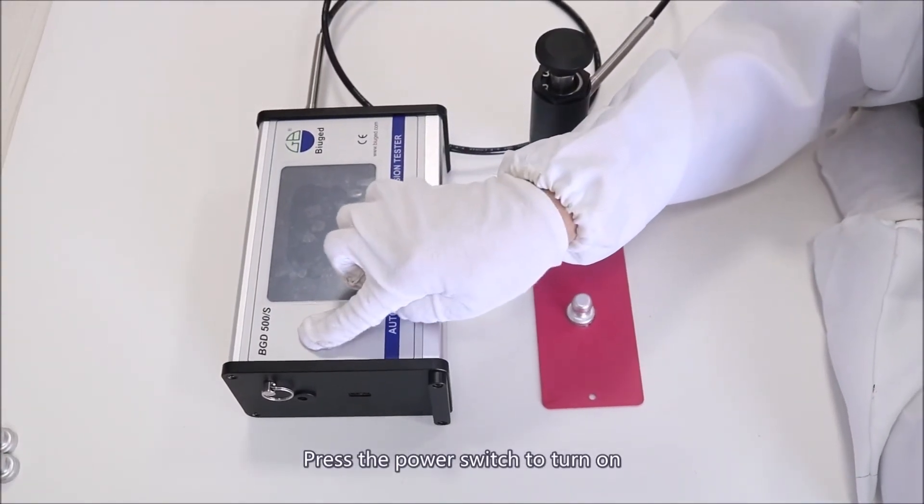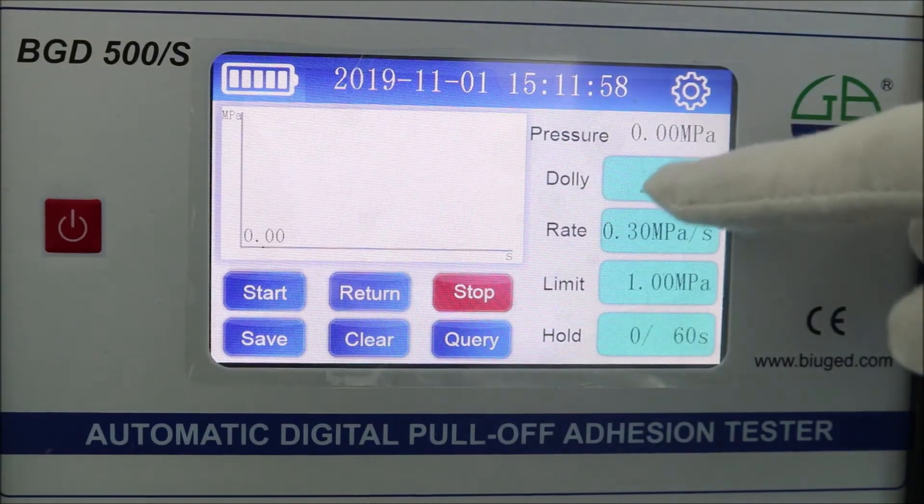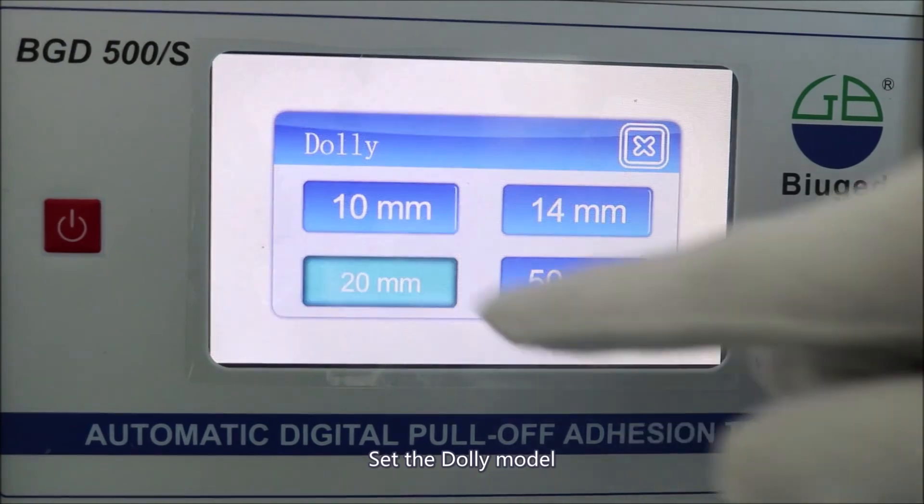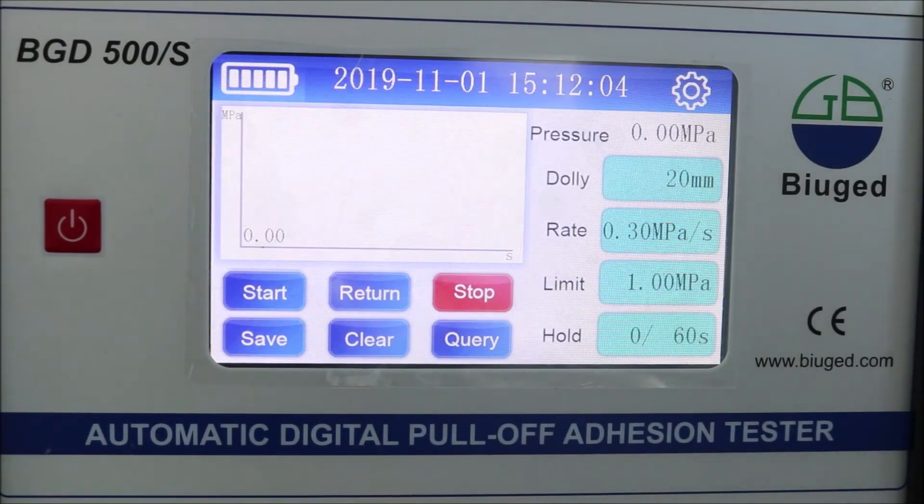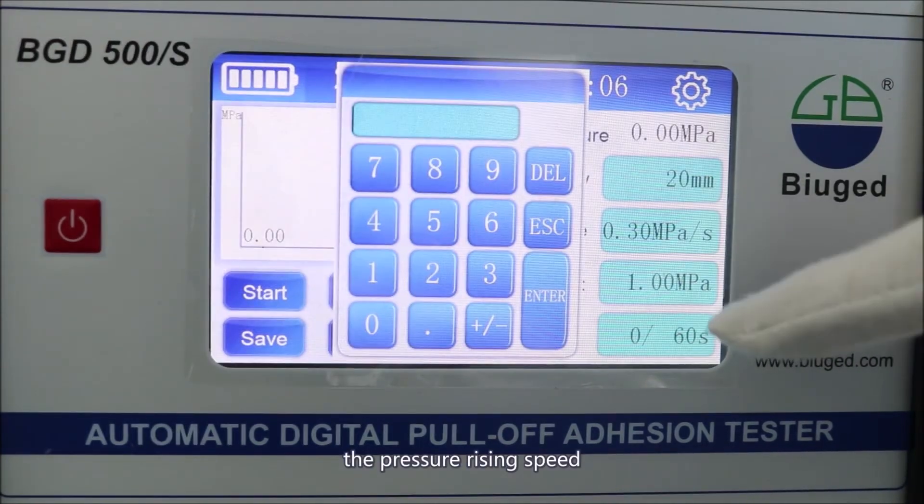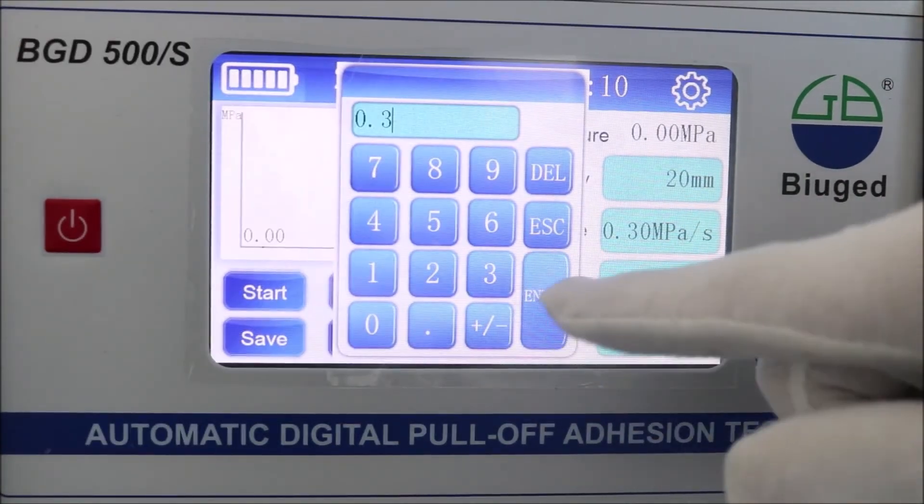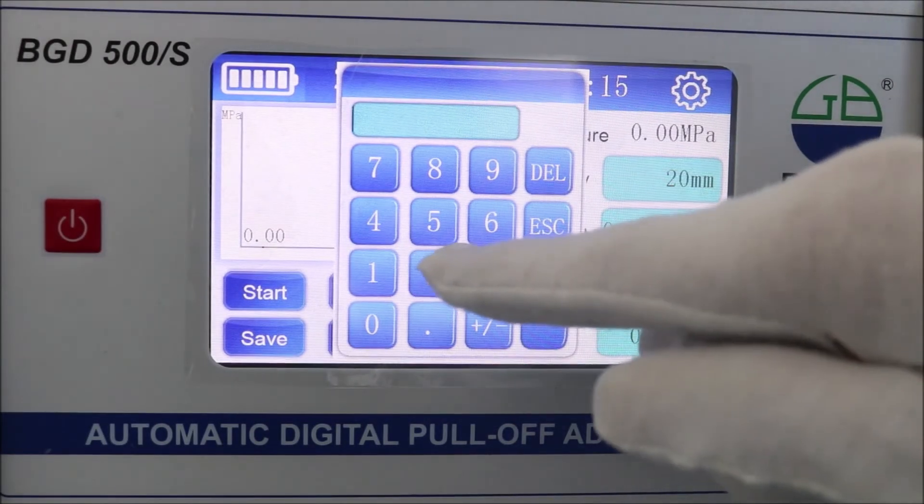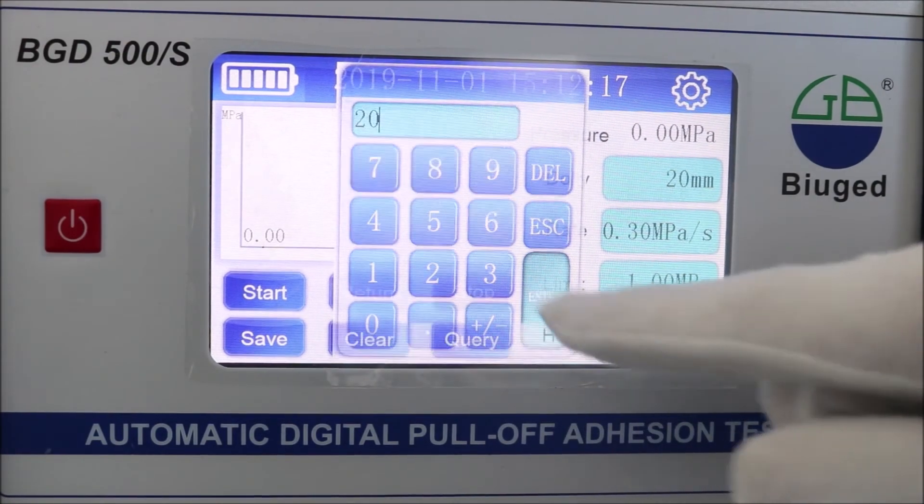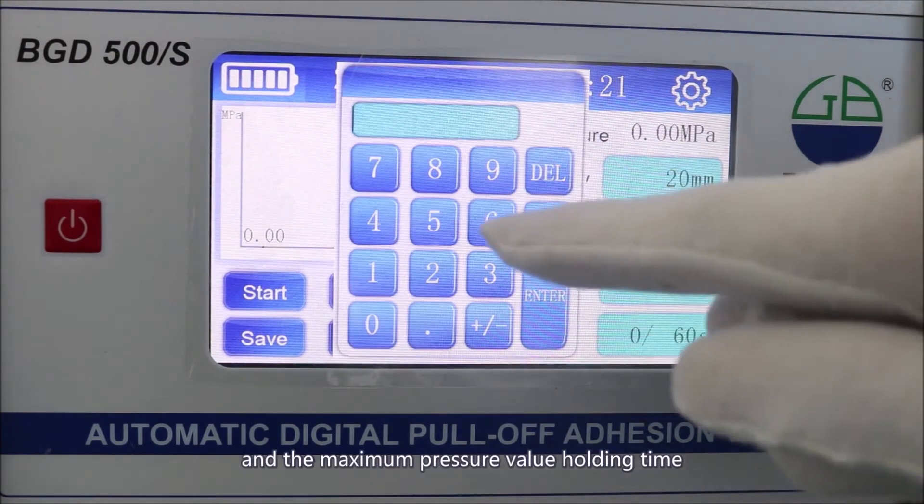Press the power switch to turn on. The screen will light up. Set the dolly model, the pressure rising speed, the maximum pressure value, and the maximum pressure value holding time.